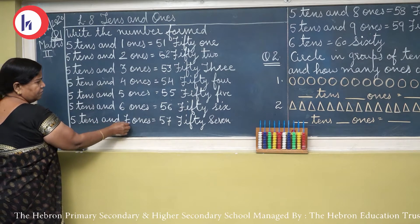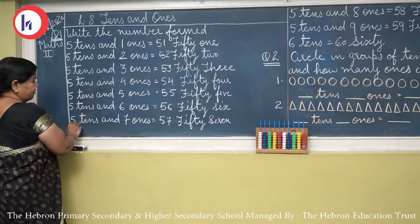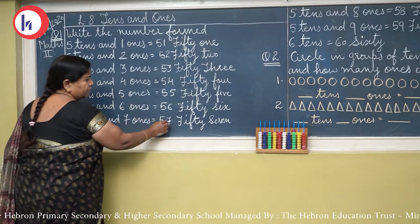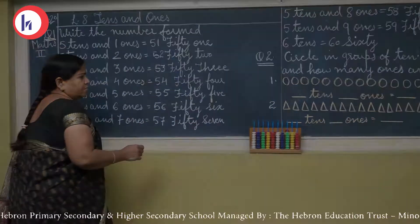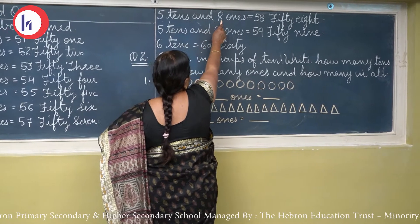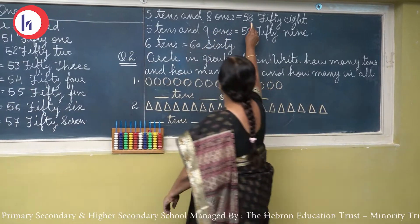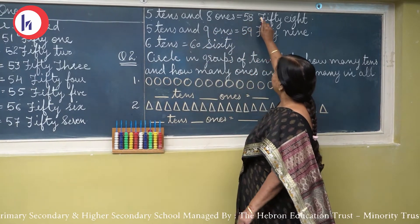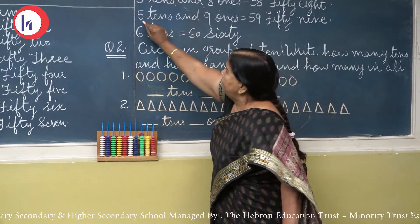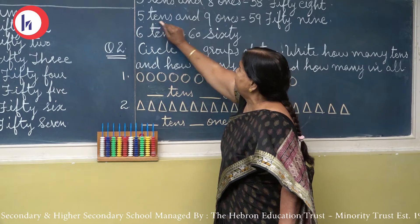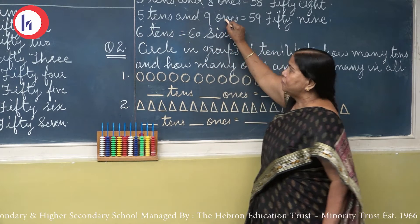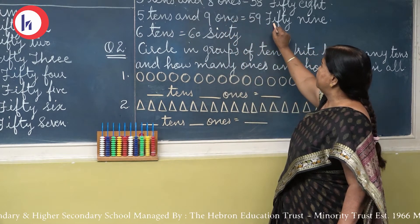So 10, 20 — 1 ten, 2 tens, 3 tens, 4 tens, 5 tens, 6 tens, 7 tens, 8 tens, 9 tens, 10 tens. So 10 tens make which number? 1, 0, 0 — 100. 10 tens is equal to 100.